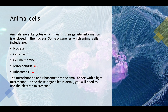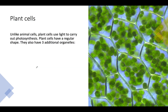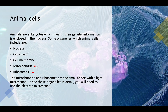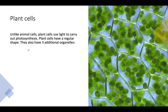Plant cells, unlike animal cells, use light to carry out photosynthesis — we'll look at that in a later video. Plant cells have a regular shape that doesn't change, and they also have three additional organelles beyond those shared with animal cells: chloroplasts, which contain chlorophyll and are important for photosynthesis; the cell wall, which keeps the cell turgid and gives it its shape; and the vacuole, which contains the cell sap.